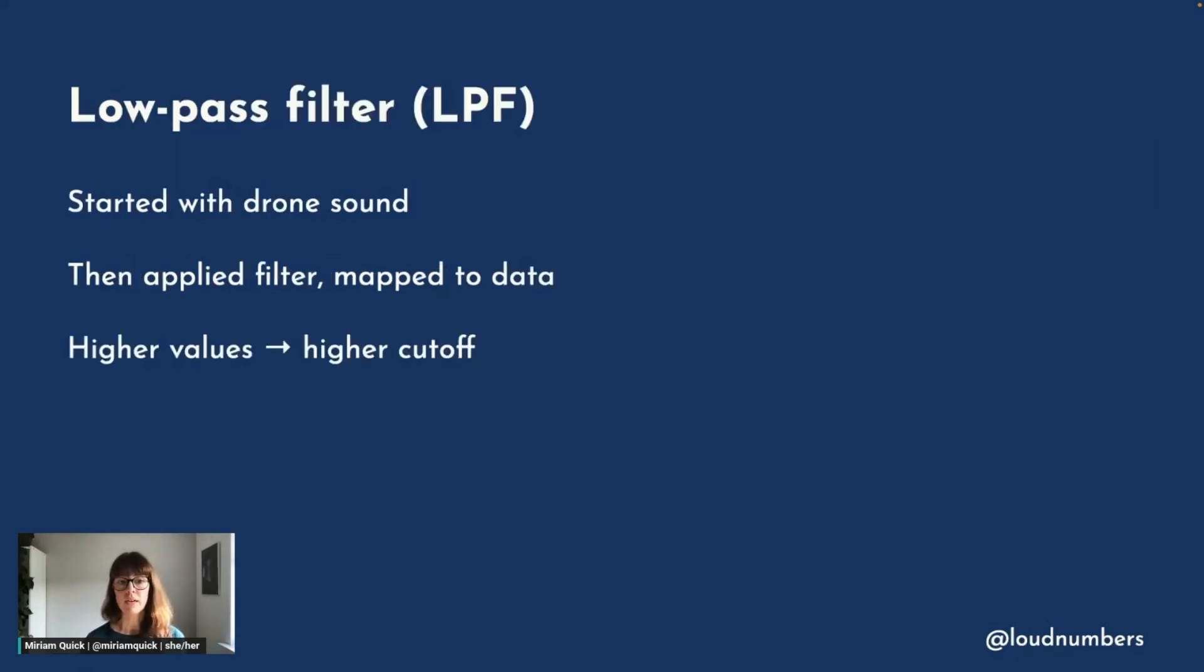So I mapped the data instead to a kind of audio effect, the cutoff of a low-pass filter. I started with a basic drone sound, and it already sounded pretty menacing, you heard it earlier. But crucially, it had lots of overtones, lots of harmonics in the sound. And then I applied the low-pass filter to the drone. So the filter was mapped to the air quality data, so that the higher the pollution levels, the higher the cutoff.